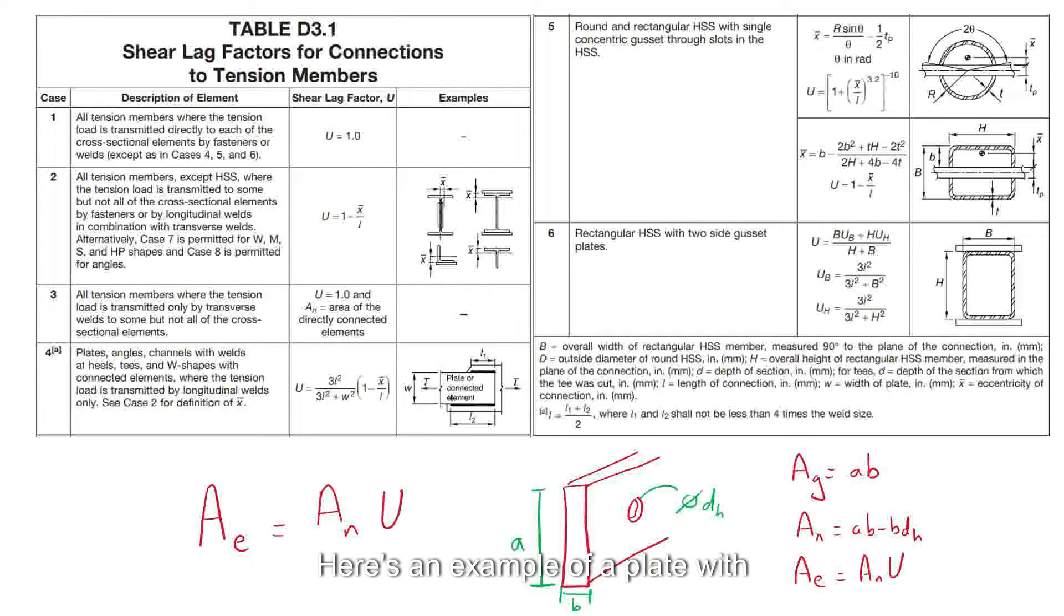Here is an example of a plate with a hole with a height of A, thickness of B, and the hole diameter of DH.